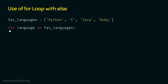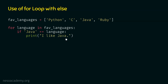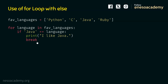Let's write the for statement first: 'for language in fav_languages'. With this statement, the language variable will receive each language of the list one at a time — first Python, then C, then Java, then Ruby. Within this for loop, we check the condition: if Java equals language. If Java is found, we print 'I like Java', then we use the break keyword to immediately terminate the loop, since it makes no sense to continue.